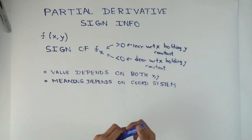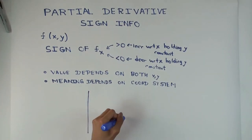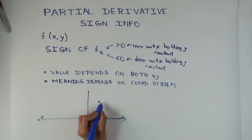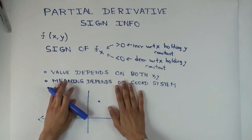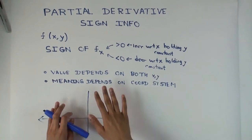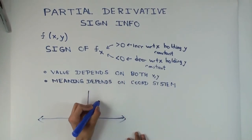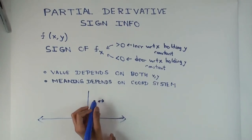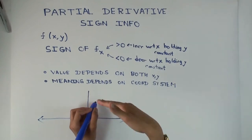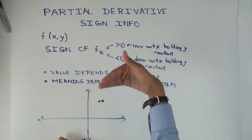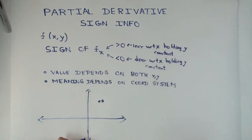Let me make a geometric picture. You're at some point, and the paper here represents the domain of the function. f sub x is telling you: if your point in the domain moves a little bit to the right while keeping the y value constant, what happens to the function value? If the partial is greater than zero, the function value increases; if the partial is less than zero, the function value decreases.